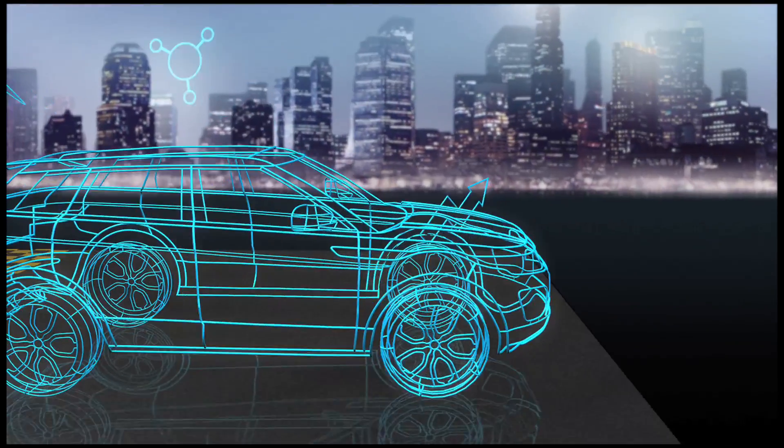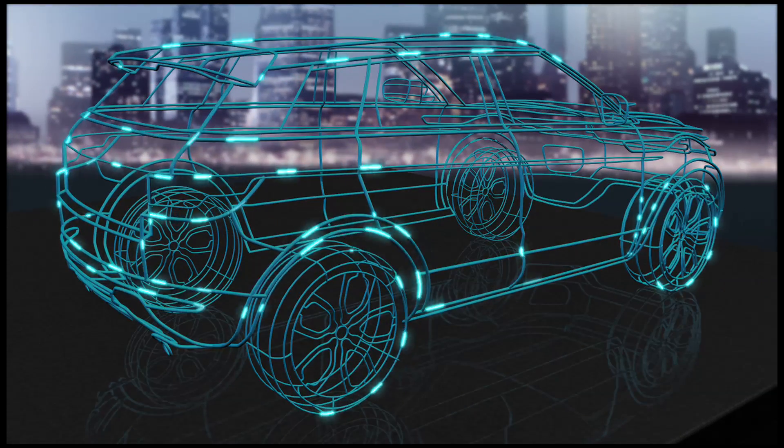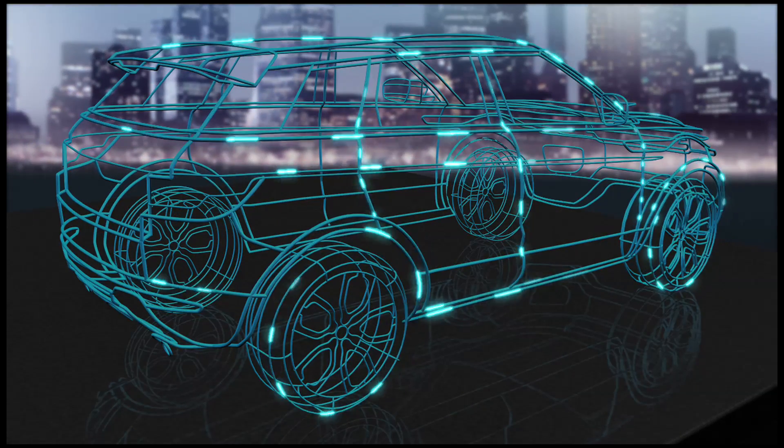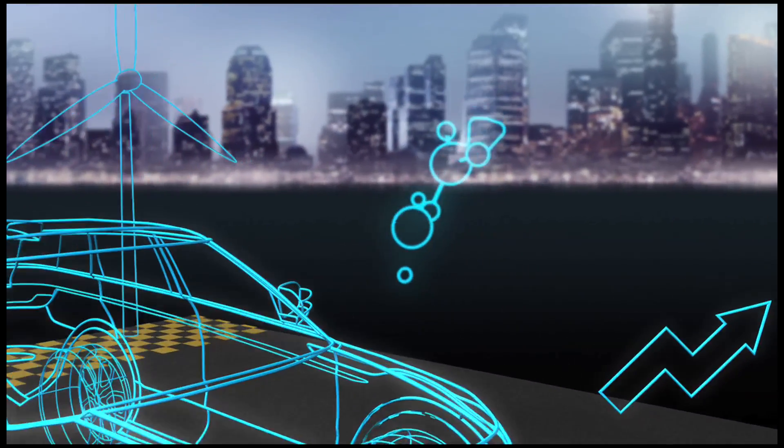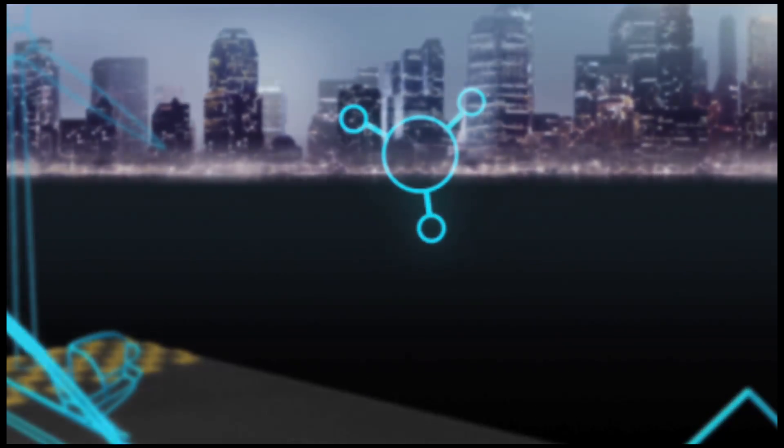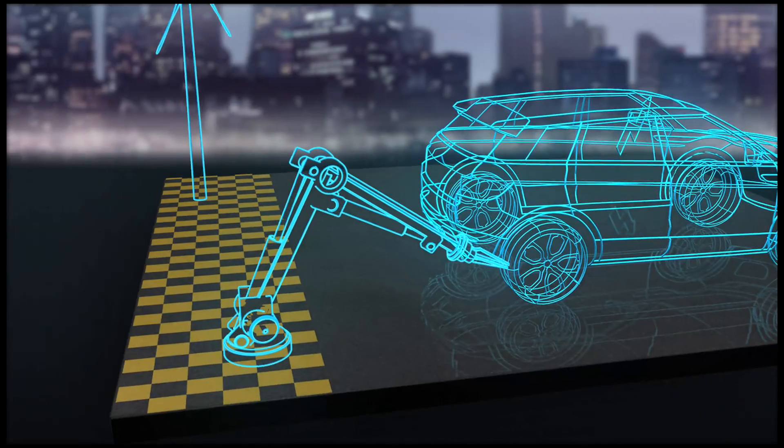First, we looked at the manufacturing phase. The Range Rover Evoque is built using state-of-the-art lightweight materials, including aluminium and polymers. Many of these are recycled, like the 16 kilos of polymers that go into every vehicle.